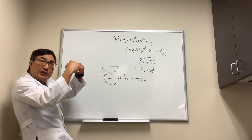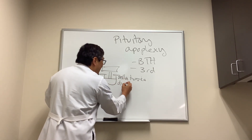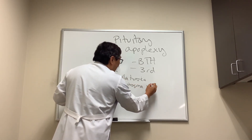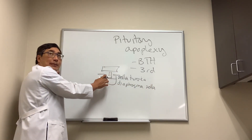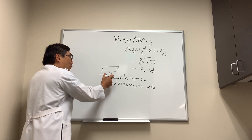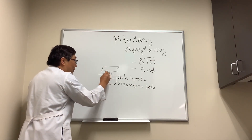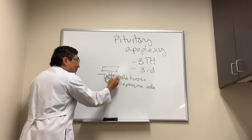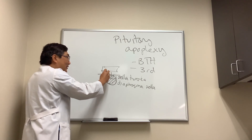That structure is called the diaphragma sellae, and it acts as a constricting band that keeps the contents downstairs from going upstairs. However, if you have a pituitary adenoma it will grow and make an intrasellar mass, but instead of just making a bigger mass it has to go through that hole first.